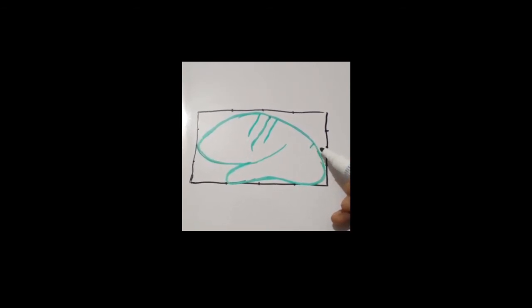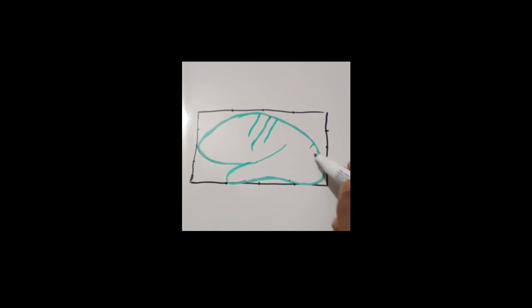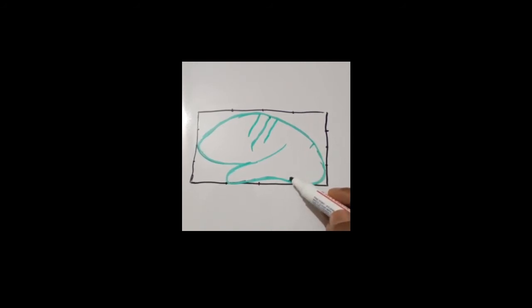Just 5 centimeters in front of the occipital pole there will be the upper end of the parieto-occipital sulcus. This sulcus is not very prominent on the superolateral surface — it is seen better at the medial surface. And here is the preoccipital notch, also situated 5 centimeters in front of the occipital pole. We have to draw an imaginary line from the upper end of the parieto-occipital sulcus to the preoccipital notch. Behind this imaginary line is the occipital lobe.